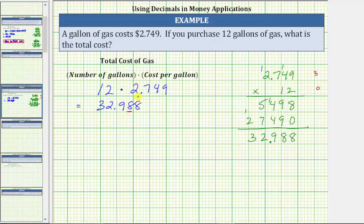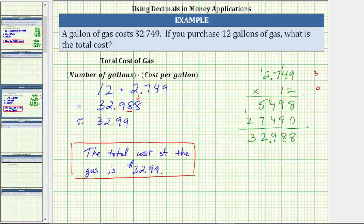Because the digit to the right is an eight, we round up, changing this eight to a nine. To the hundredths, this rounds to 32.99. So the total cost of the gas is $32.99. I hope you found this helpful.